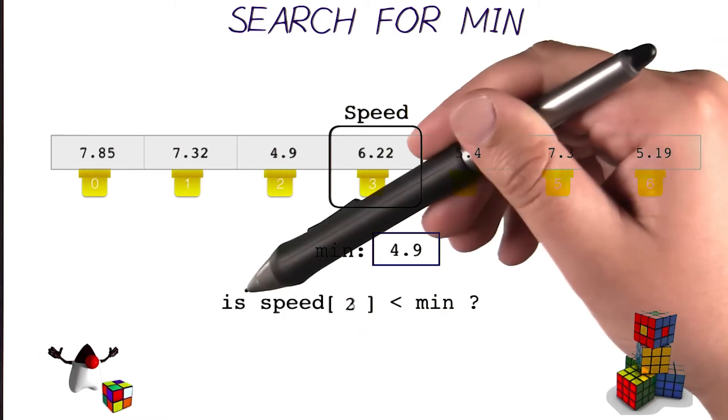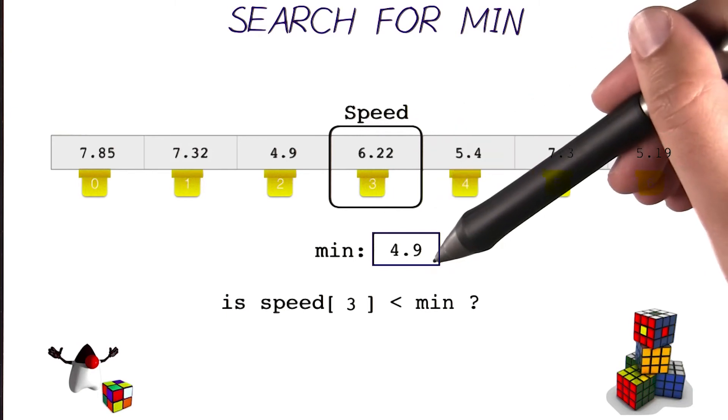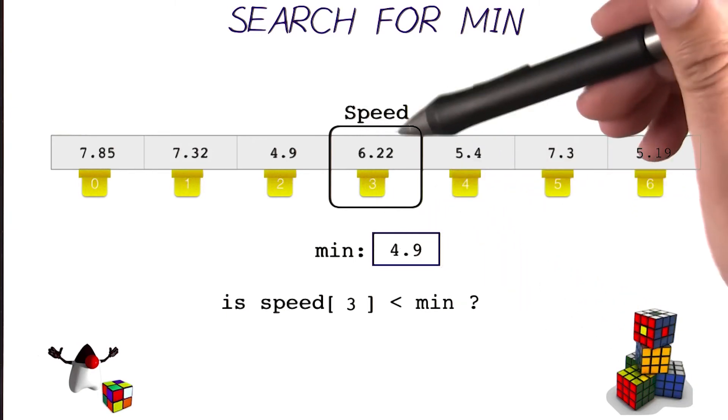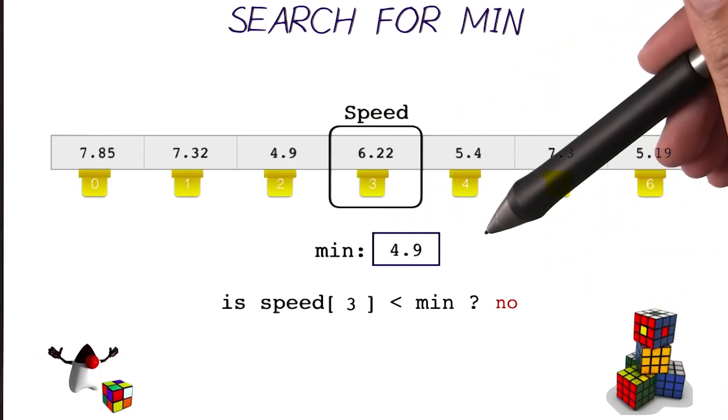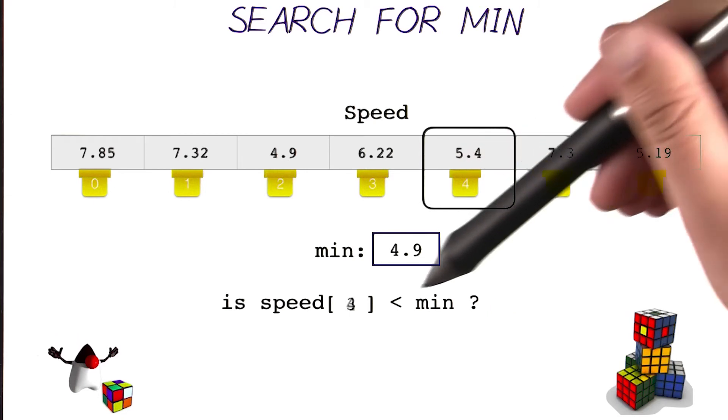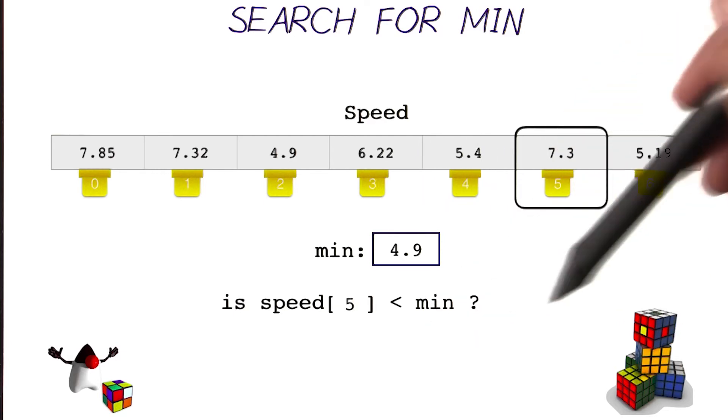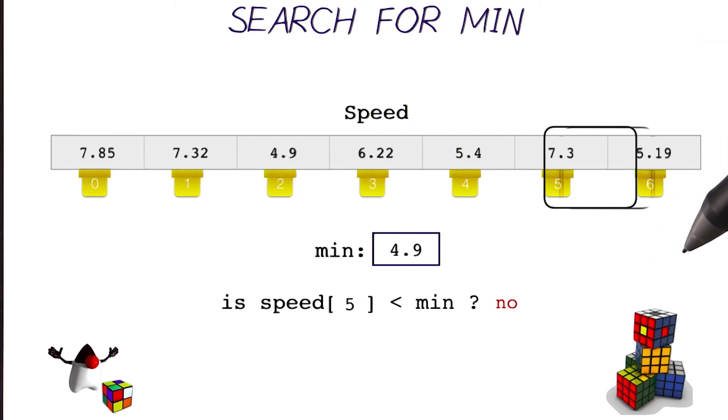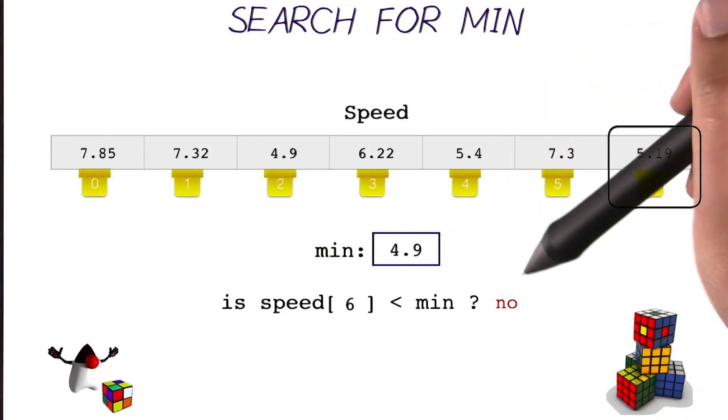And then I ask the question again. Is speed of 3 less than minimum? Speed of 3 is 6.22, and minimum is 4.9. So obviously it's not less than it anymore, so I don't update minimum. I move on, and then I get 5.4. 5.4 is not less than 4.9, so I continue to move on. And then 7.3 is not smaller than 4.9, so I continue moving on. 5.19 is also not smaller than the minimum. So I end up going through the entire array, and the minimum value that I found was 4.9.